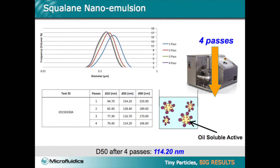After four passes, the microfluidizer was able to achieve a D50 of 114.2 nanometers. We hope you enjoyed this video, and invite you to contact us to set up your own proof-of-concept testing with your own formulation.